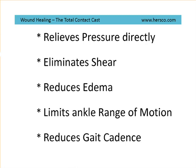The advantages of the total contact cast are that it relieves pressure because there's an aperture for the wound. There's an elimination of shear because there's no motion of the foot inside the cast itself. Because of the wrap nature of the fiberglass, there's a reduction in fluctuating edema in the leg itself. And finally, it limits range of motion at the ankle, so it reduces peak pressures on the forefoot during the gait cycle.